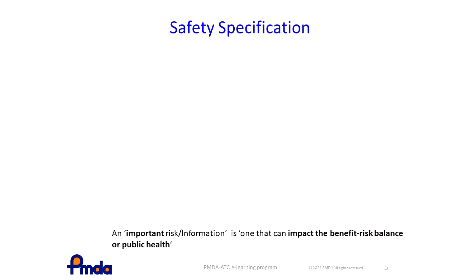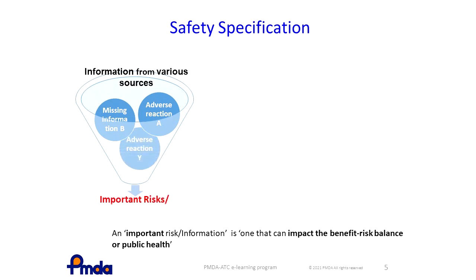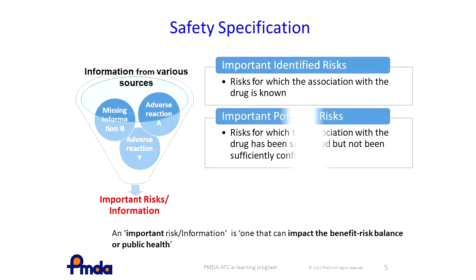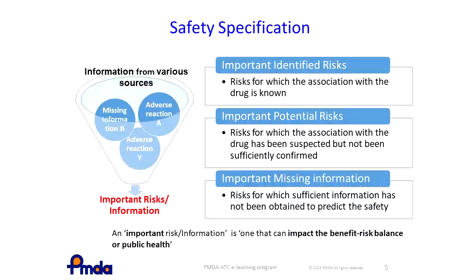Safety specification functions as a summary of the safety profile of a drug. Product safety profile is characterized on the basis of information from various sources, like animal studies, clinical studies, overseas post-marketing, and experience of same-class drugs. To describe the safety profile of drugs, ICH guidelines introduce the concept of identified risks, potential risks, and missing information. These definitions are shown here.